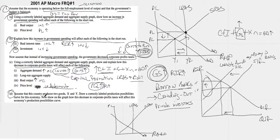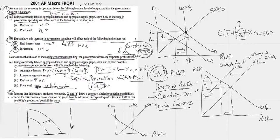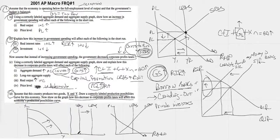For part D, assume that the country produces two goods, X and Y. Draw a correctly labeled production possibility curve for this economy and show how this decrease in corporate profit taxes will affect the economy's production possibility curve. You have to recognize that your PPC is your long run aggregate supply curve — they are really the same thing, very closely related. If your long run aggregate supply curve shifts to the right, your PPC has to shift out. So with two goods, X and Y, we show the shifting out or shifting right of your long run aggregate supply curve.